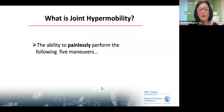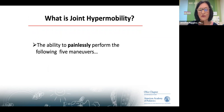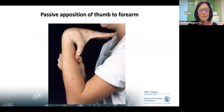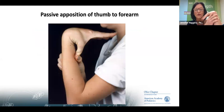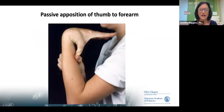When referring to joint hypermobility, we're referring to the ability to painlessly perform the following five maneuvers — the Beighton scoring five maneuvers. The first is: can you oppose your thumb to your forearm? If you can do that on either side, that's two points.